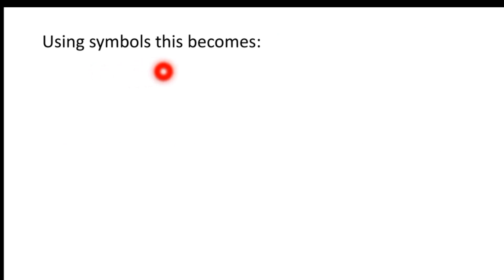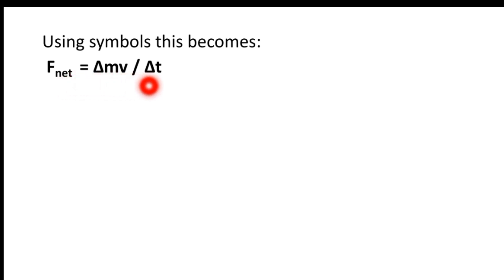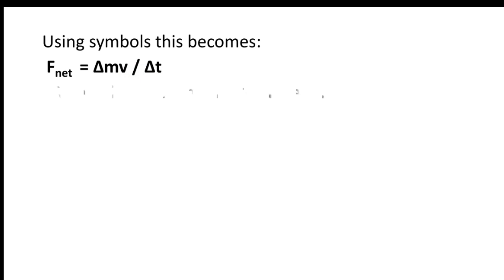Using symbols, this becomes: F_net is equal to change in momentum over change in time. The resultant force equals the rate of change of linear momentum. Remember, the delta symbol means 'change in'.